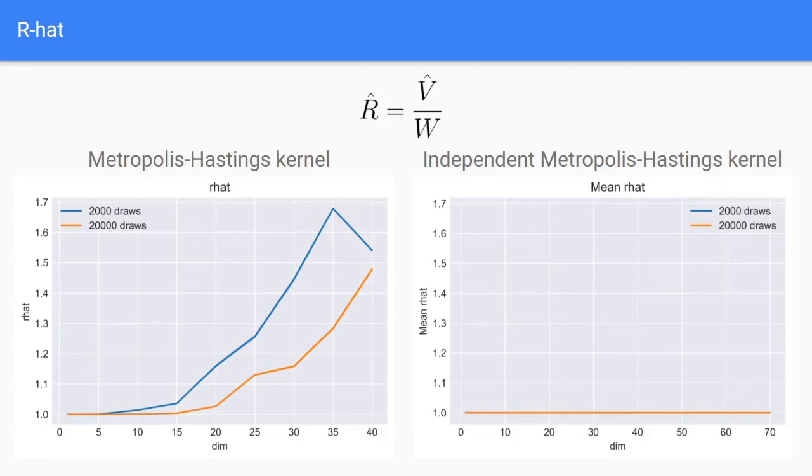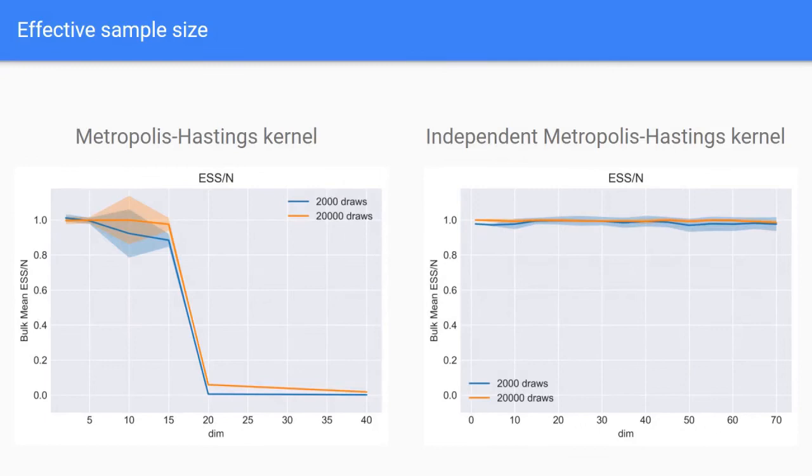When we look at the R-hat when run with the Metropolis-Hastings kernel, we can see that it increases at higher dimensions. This can be somewhat remediated by increasing the number of draws, as can be seen in the orange color line. This is consistent with what the error score shows. On the other hand, we can see on the right side picture that for the independent Metropolis-Hastings kernel, R-hat indicates a good convergence.